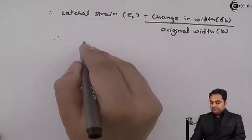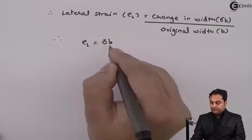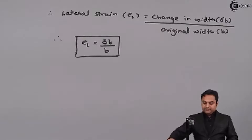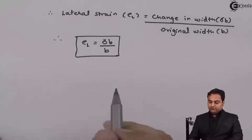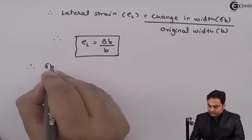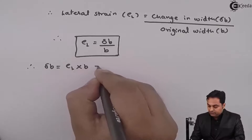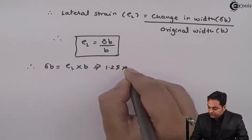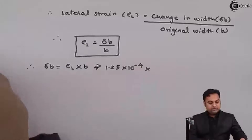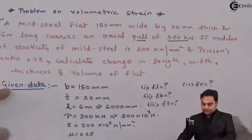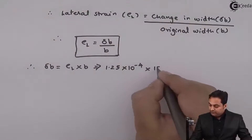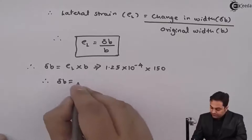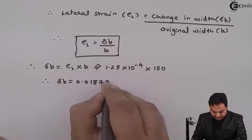Lateral strain = δB / B. Therefore change in width δB = lateral strain × B = 1.25 × 10⁻⁴ × 150 = 0.01875 mm.